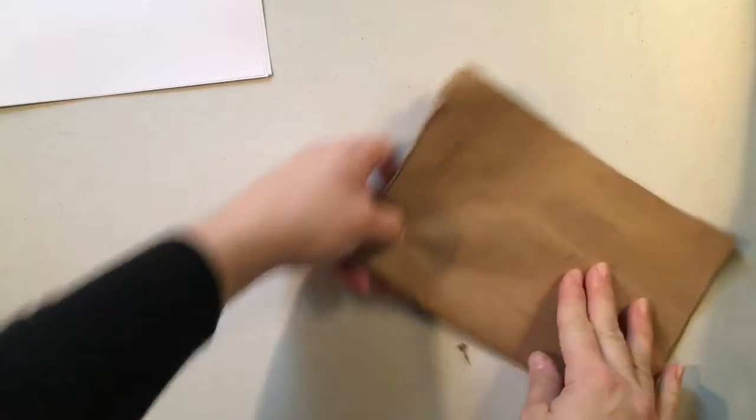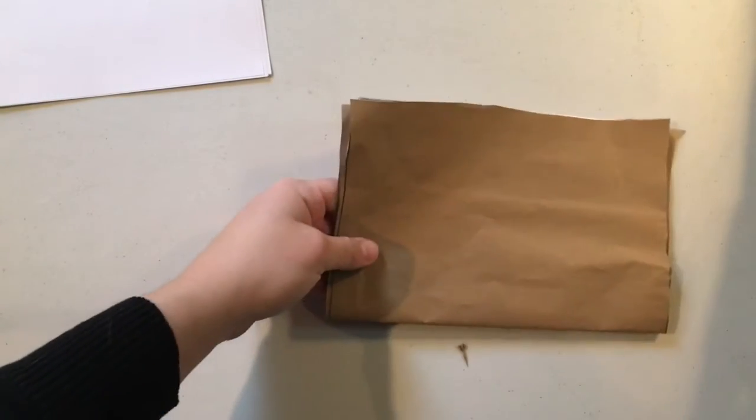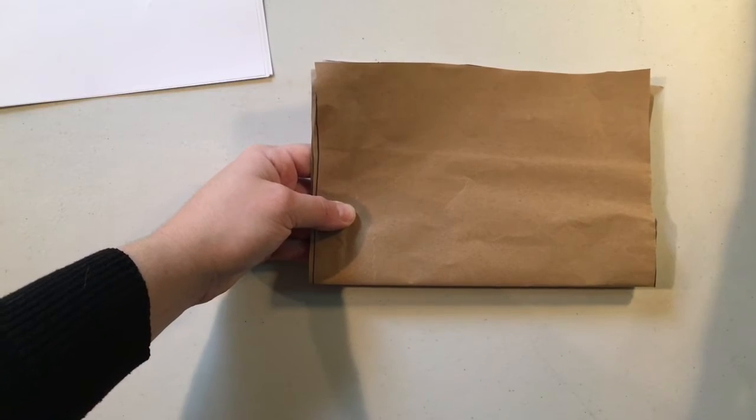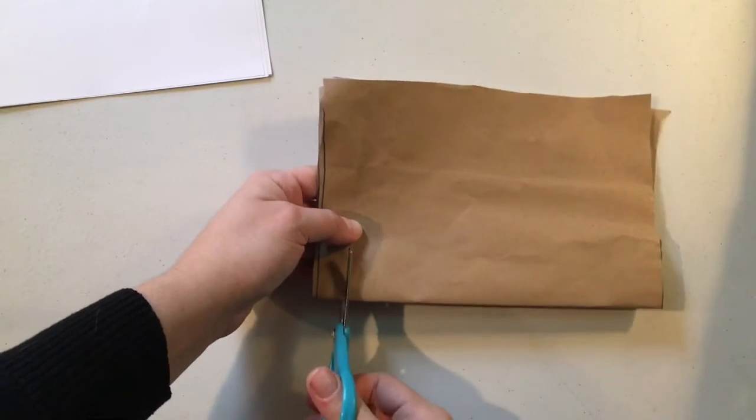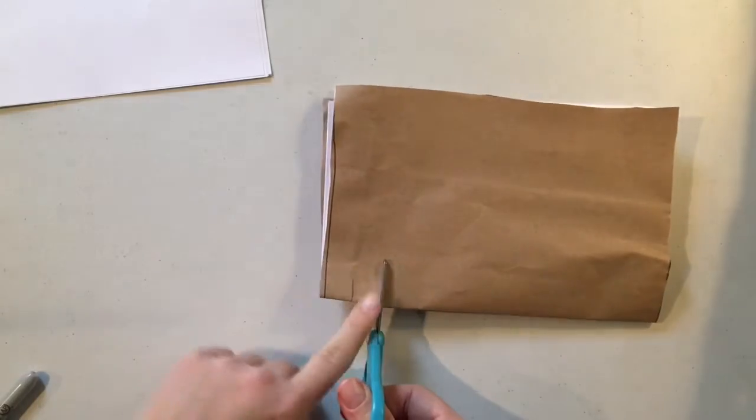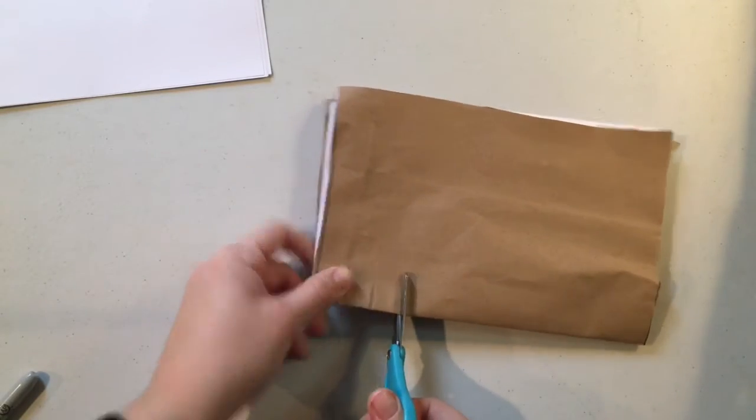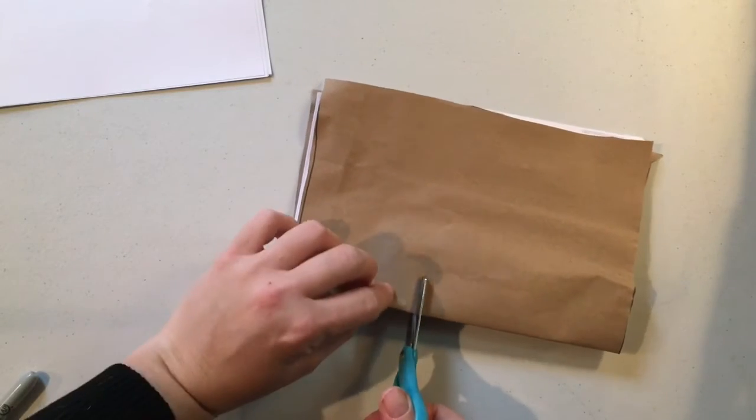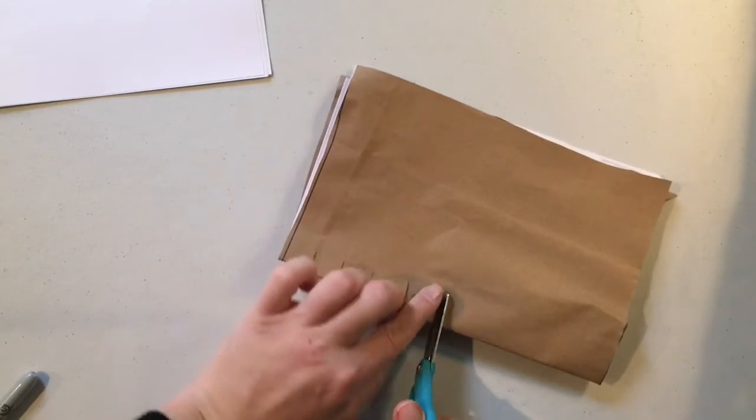And then what I'm going to do to bind it, it's a really simple binding today. I'm just going to cut small snips about one finger wide down the spine of my sketchbook.